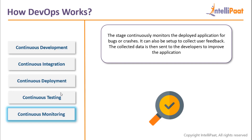Once it reaches the production server, it gets monitored — for user activity, for errors, for user comments, and for feature requests. All those feature requests, errors, and logs are stored inside a monitoring tool. This monitoring tool helps sort the logs — general logs, error logs, feature requests — making it a one-stop destination where you can check and plan your team's work for the near future.